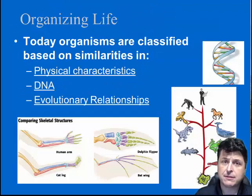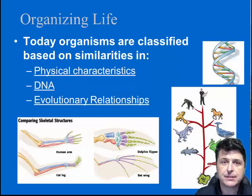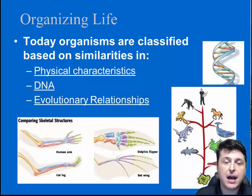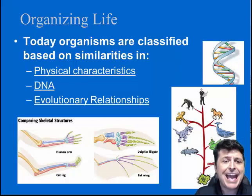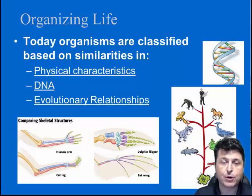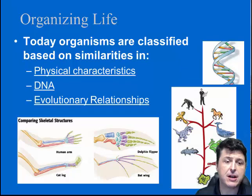Today, organisms are classified based upon a lot of particular similarities. The main categories we use for organizing life are going to be physical characteristics — like some of their homologous traits — their shared DNA, and any inferred evolutionary relationships they might have. We want to put organisms that share a more common ancestor into groups more closely with one another than organisms that don't have that recent common ancestor.